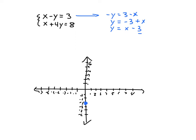Then I'm going to rise one, run one, rise one, run one because the slope is one. So I'm going to go ahead and do a few points there. I can do some points in the other direction too. So that's the first equation.